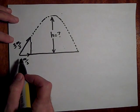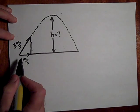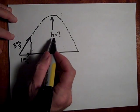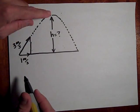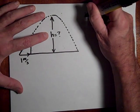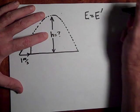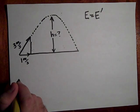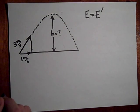Now let's see how you can use energy to do projectile motion problems. Here's an object being fired up at 3 meters per second, and its x-component is 1 meter per second. The question is: how high up is this going to go? You can use E equals E-prime to find that. Go ahead and try it.